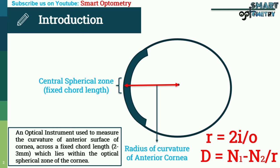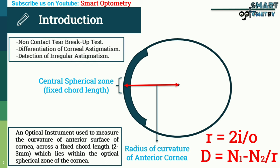Other uses of the keratometer include the non-contact tear breakup time test, differentiation of corneal astigmatism, and detection of irregular astigmatism.